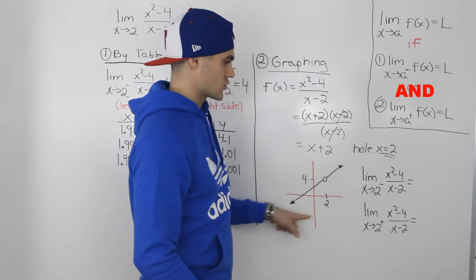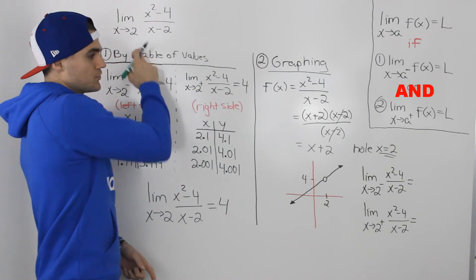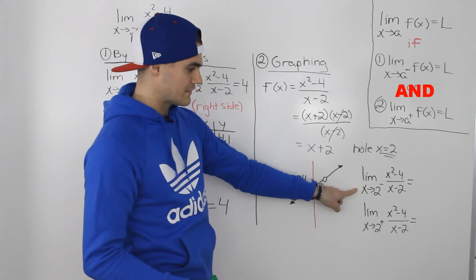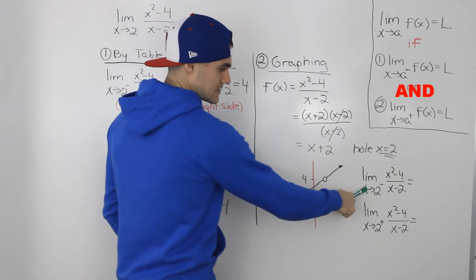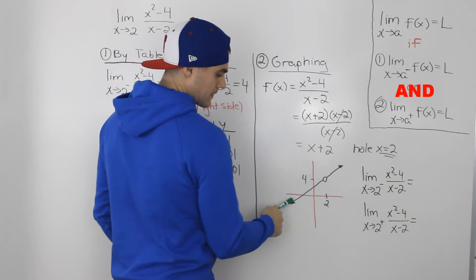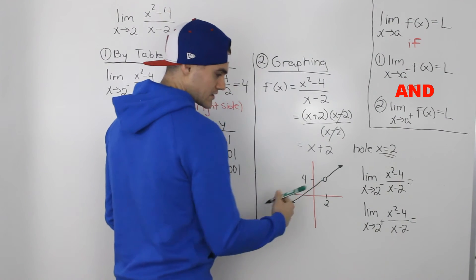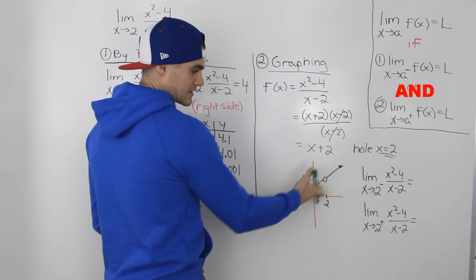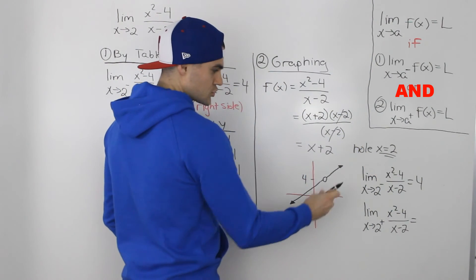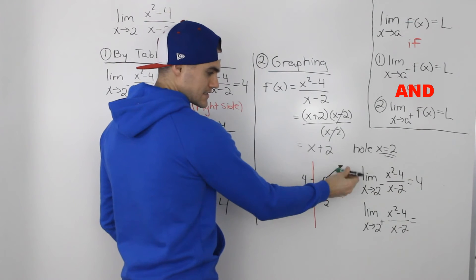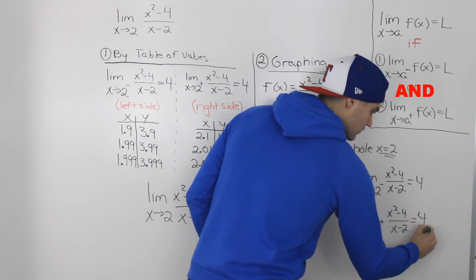Looking at this graph, we can solve the one-sided limits. Since we're finding the limit as x approaches 2, we have to find the limit from the negative side and the positive side. For the left-side limit, as we approach an x value of 2 from the left side, the y value of this line approaches 4. And if we approach 2 from the right side, the y value the line approaches is also 4.